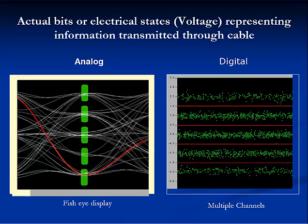This slide shows the actual bits, or electrical states, in the form of on-off voltages representing information, and that these bits must be transmitted through a physical media, whether that media is copper, optical fiber, air, water, or for that matter, vacuum in space.